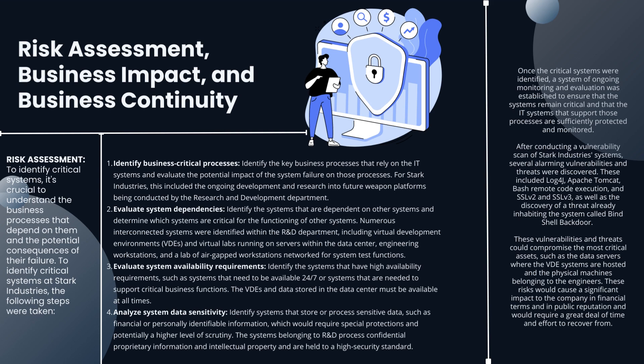Numerous interconnected systems were identified within the R&D department, including Virtual Developed Environments (VDEs) and virtual labs running on servers within the data center, engineering workstations, and a lab of air-gapped workstations networked for system test functions. Step three: evaluate system availability requirements — identify systems that have high availability requirements, such as those that need to be available 24/7 or support critical business functions. Step four: analyze system data sensitivity — identify systems that store or process sensitive data such as financial or personally identifiable information (PII), which would require special protections and potentially a higher level of scrutiny.